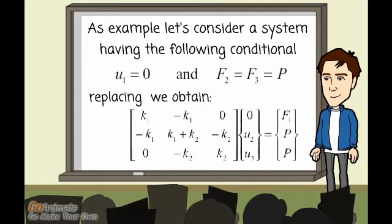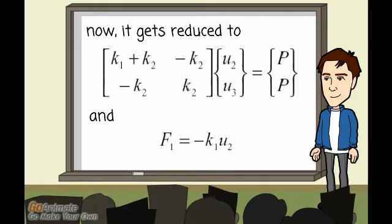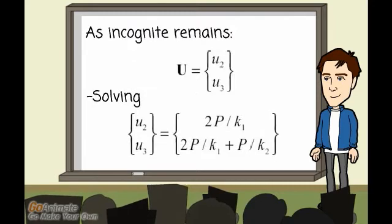As example, let's consider a system having the following conditional. Now it gets reduced to... As incognite remains U, and solving the system, we get...